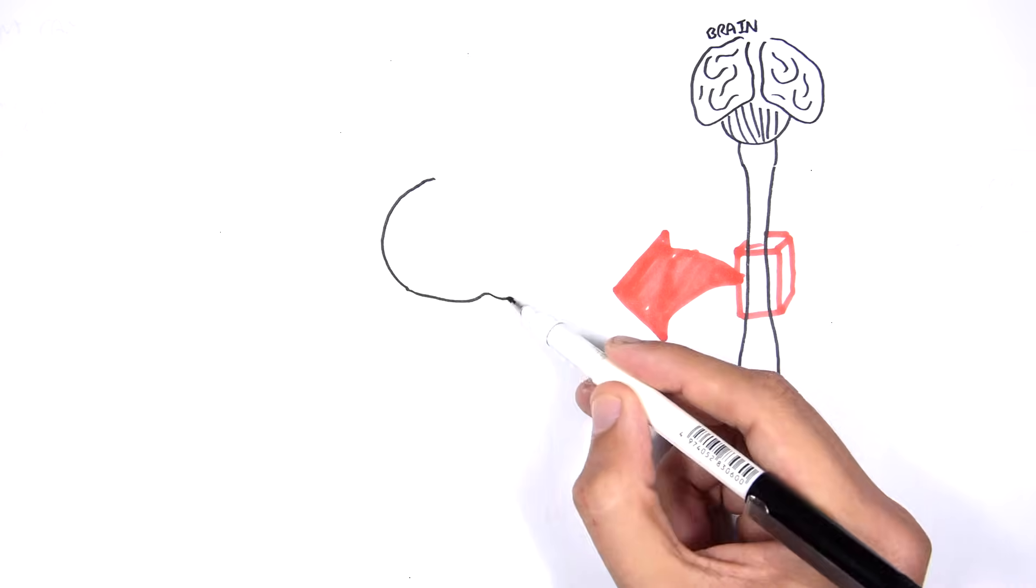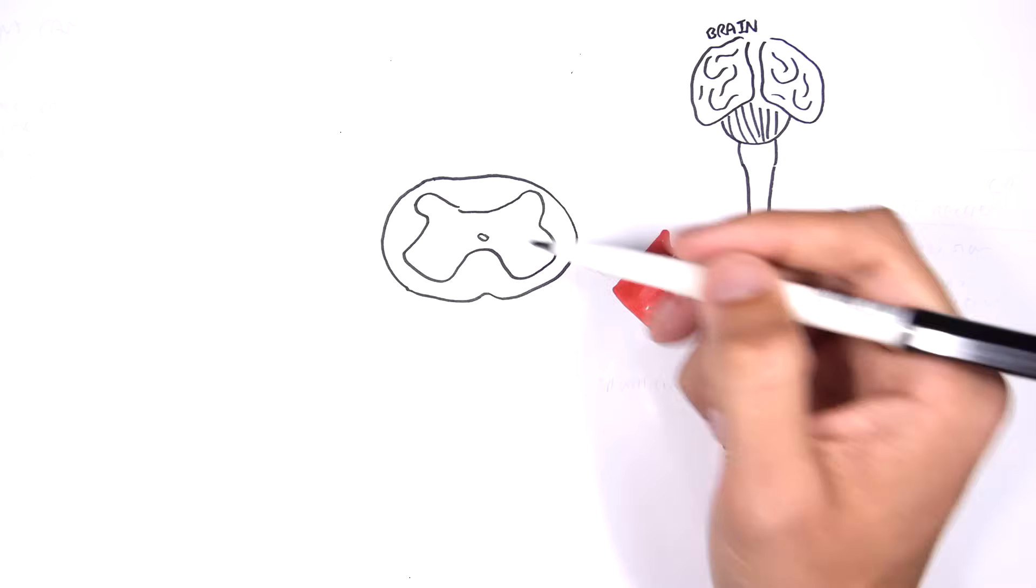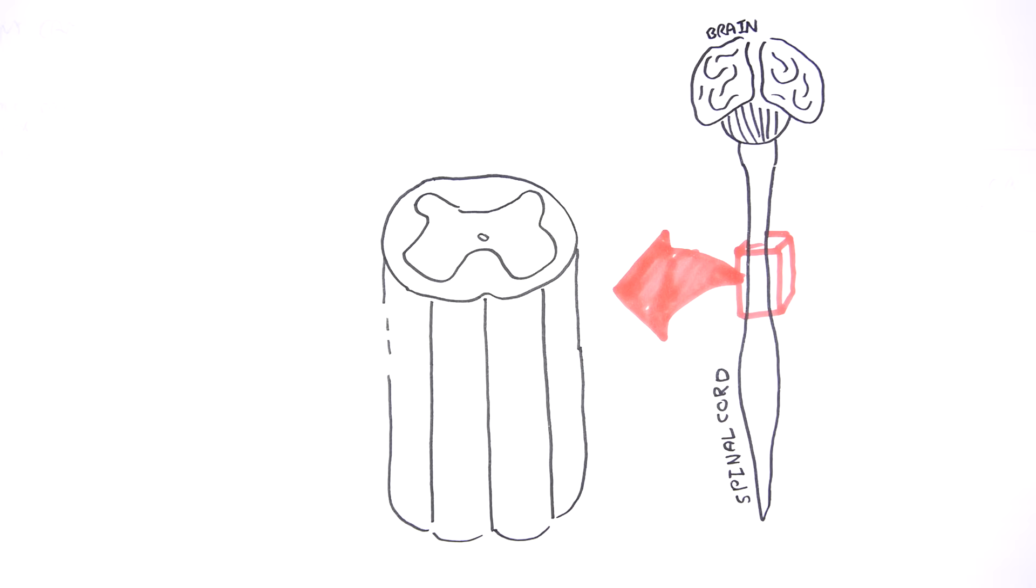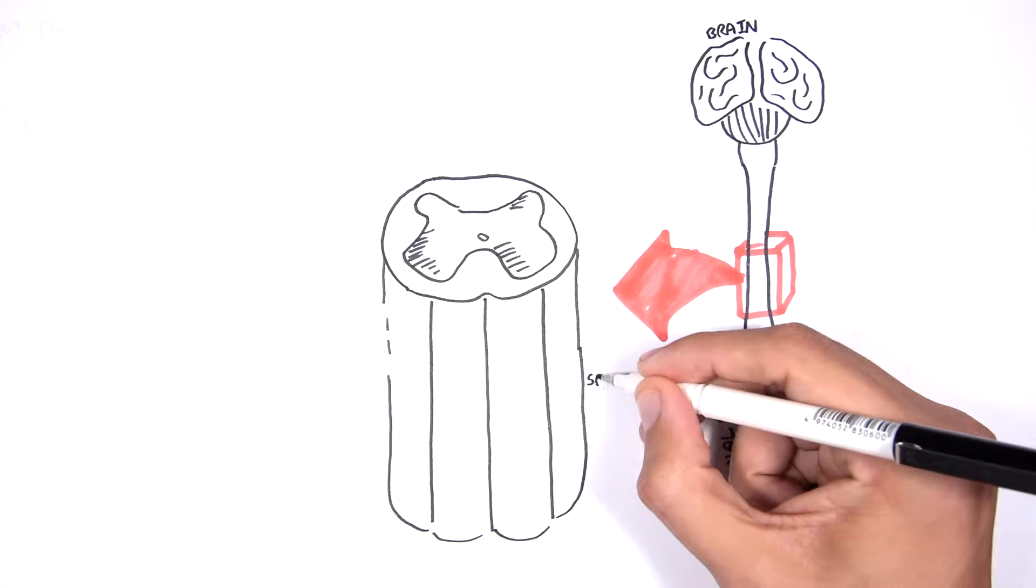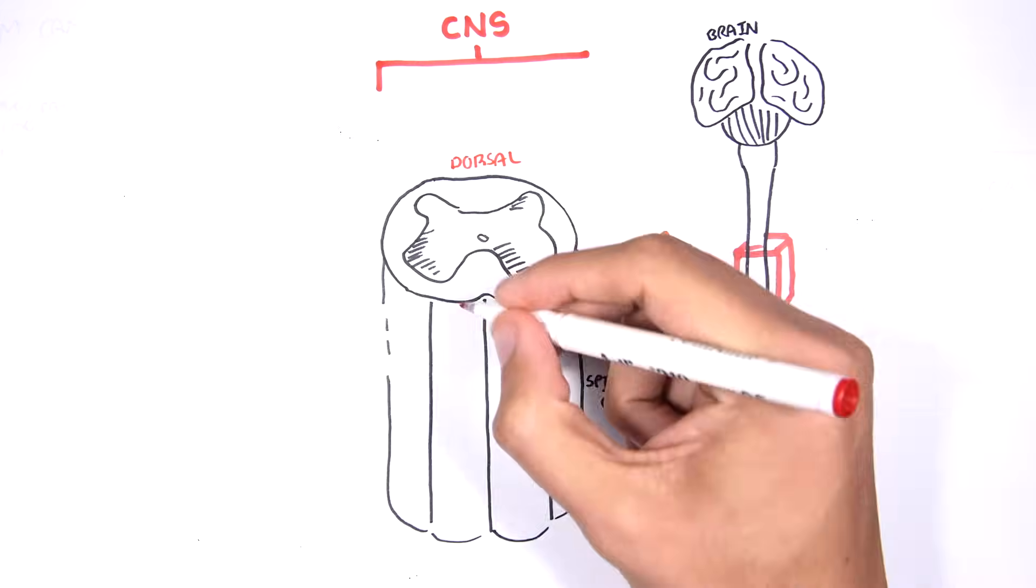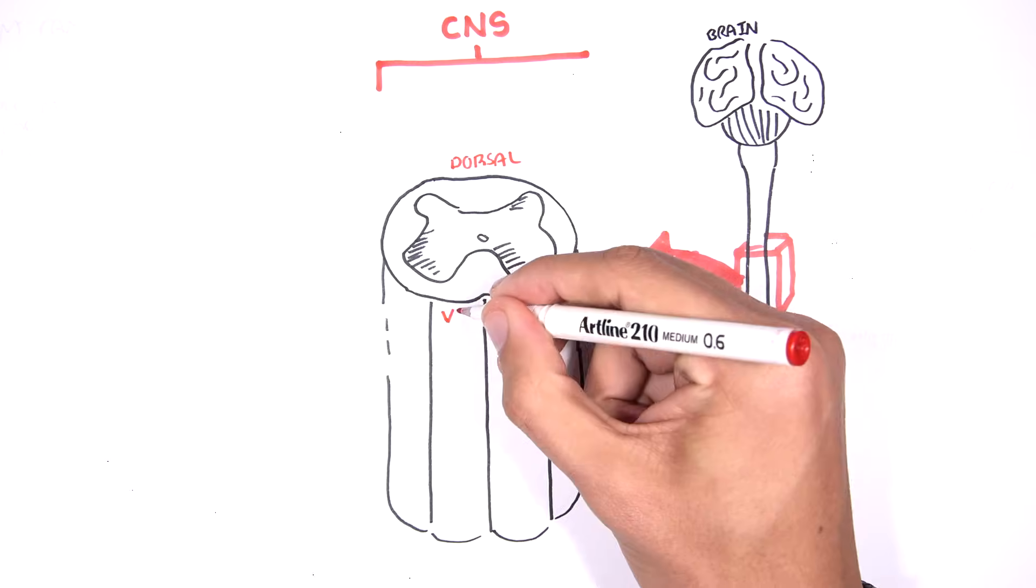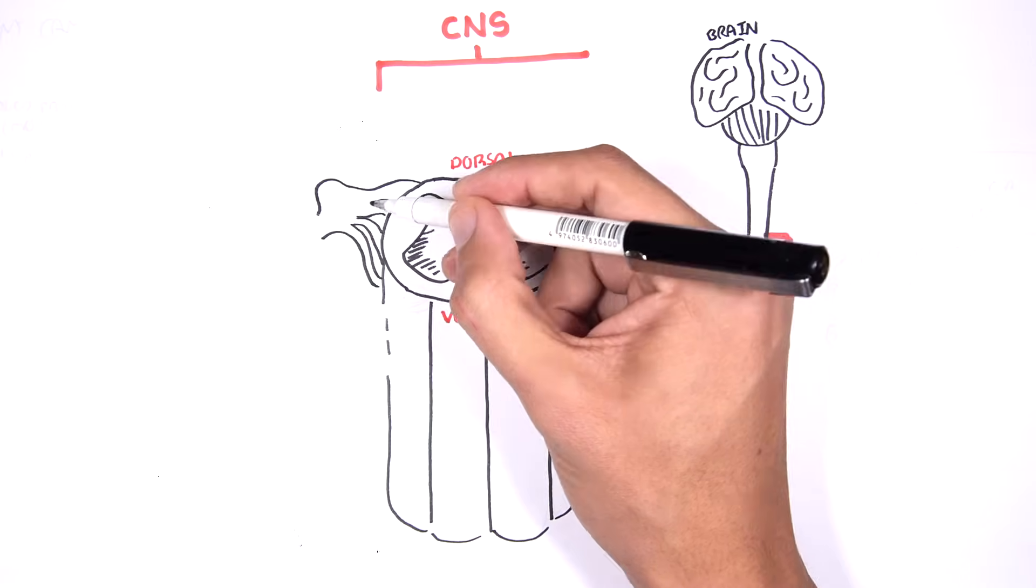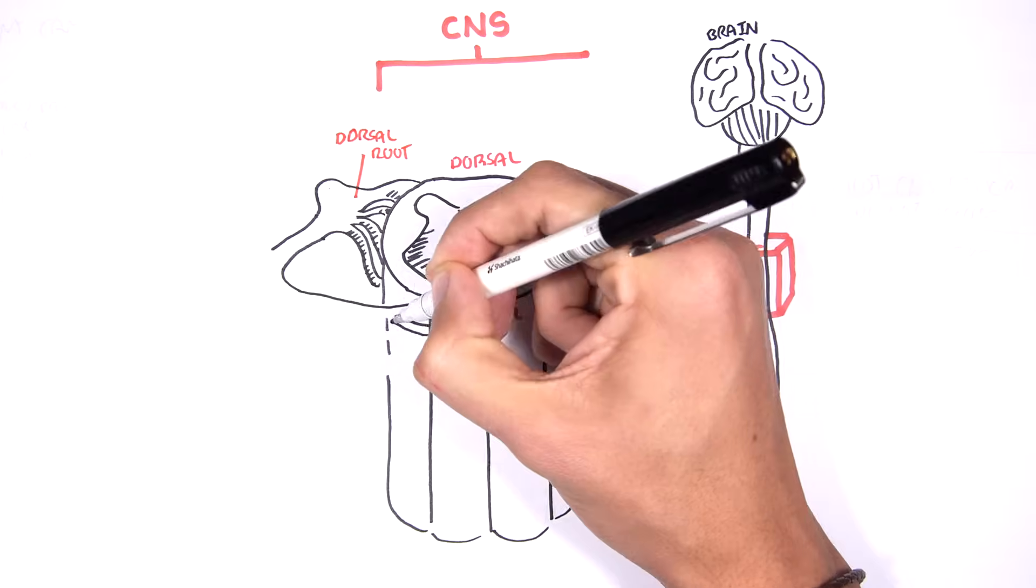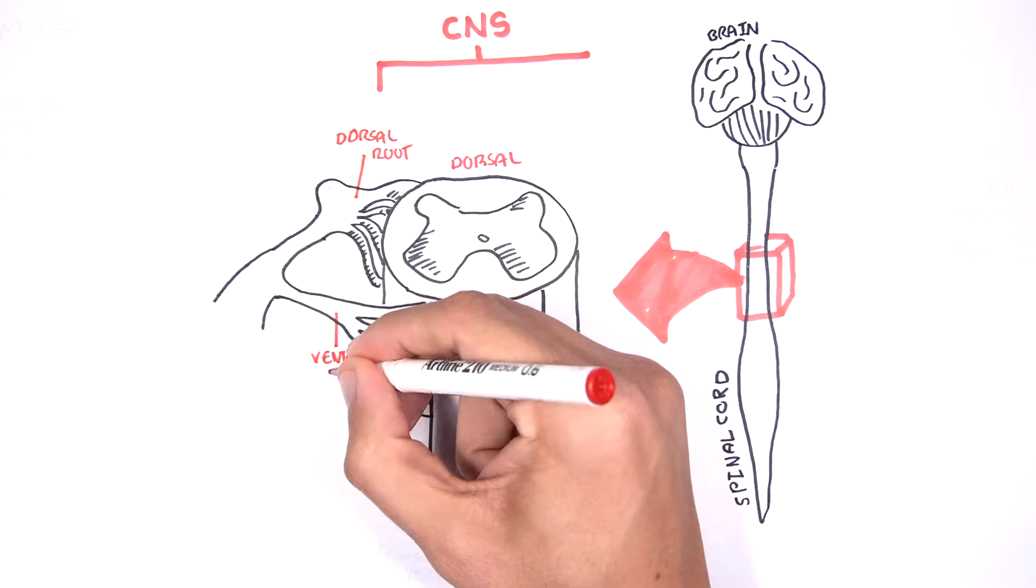If we zoom into this section of the spinal cord, let's look at some familiar structures. We have the dorsal side of the spinal cord, or the back, and then we have the ventral side of the spinal cord, or the front. We have a dorsal root and ventral roots, which are basically clusters of neurons that connect to form a spinal nerve.